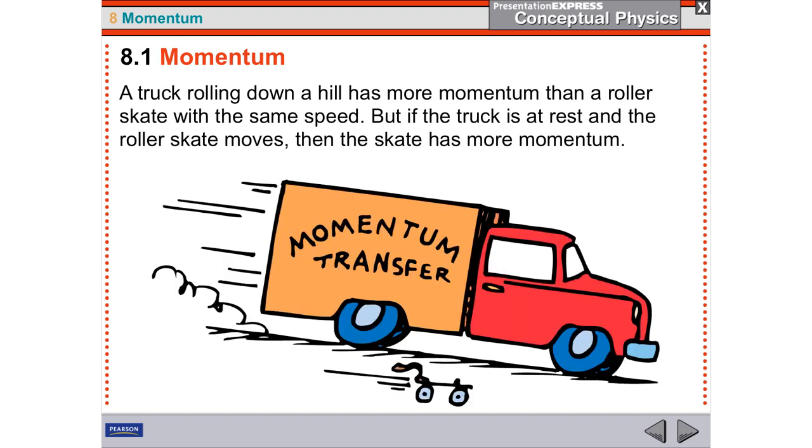What about a truck and a roller skate? Can they have the same momentum? Yes. If a truck is 10,000 times more massive than a roller skate, in order for the roller skate to have the same momentum as the truck, it has to be traveling 10,000 times faster. You can see that momentum, since it's based on two different things, as those two things change, momentum is going to change.